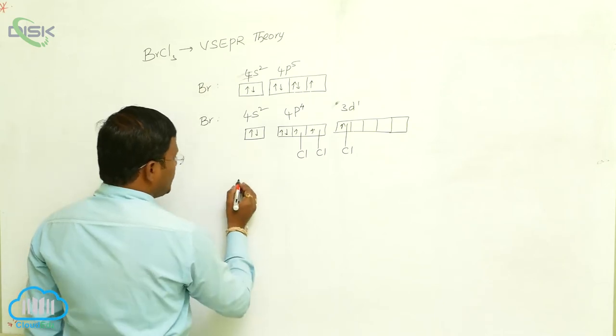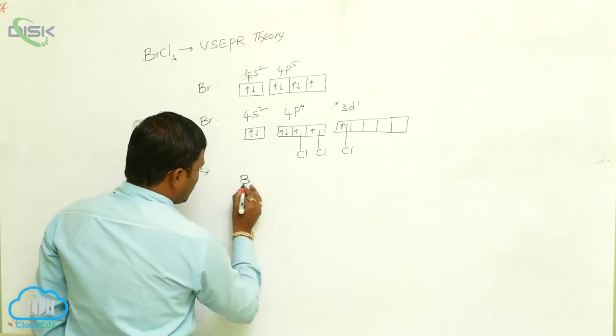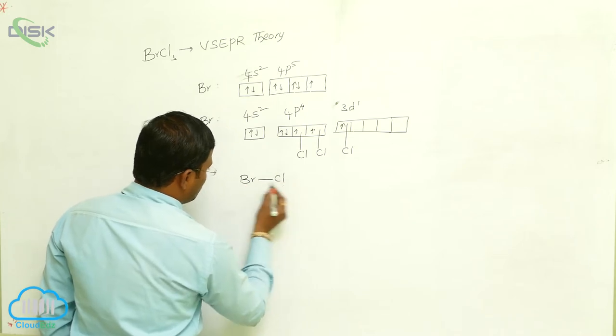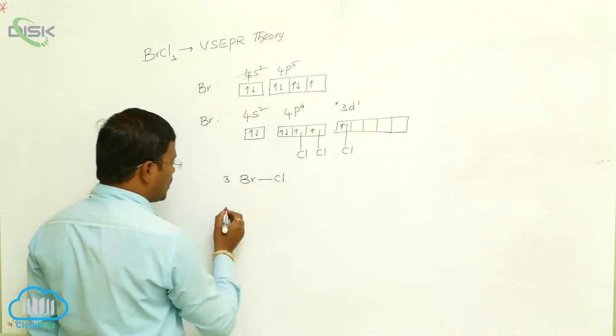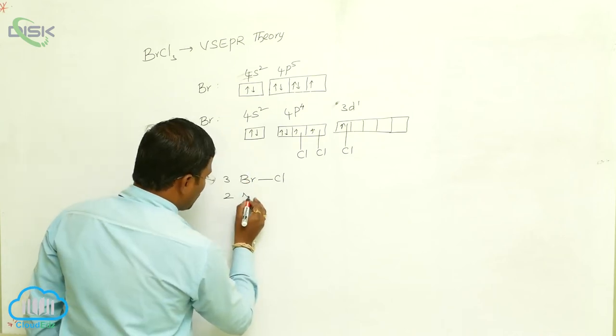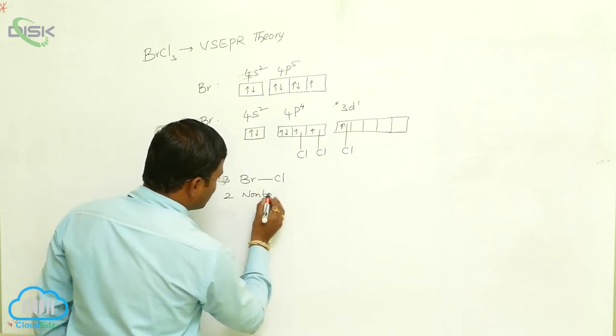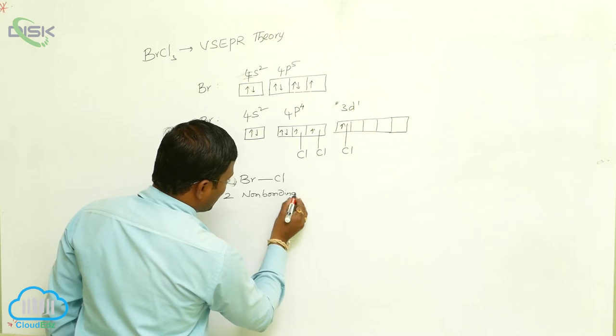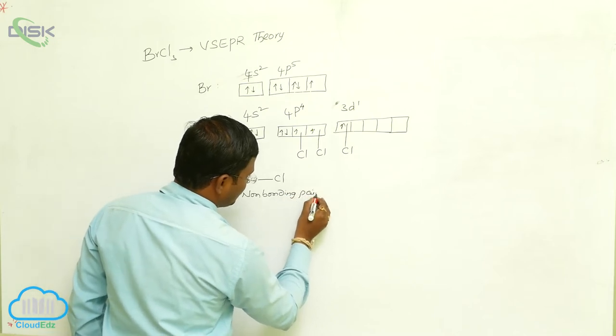In the resulting BrCl₃, three bromine-chlorine single bonds are present, and bromine has 2 non-bonding electron pairs.